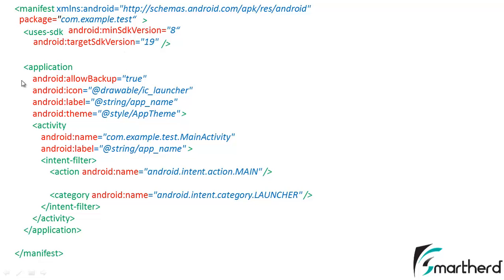Now the elements icon, label, and theme are of less significance here. The icon is the app icon that appears on your smartphone, and the theme is what I talked about in style.xml — you can change your app theme from there.